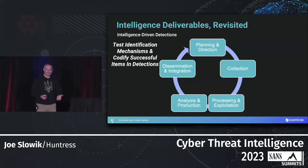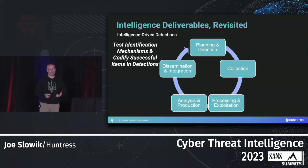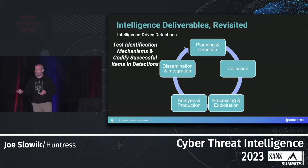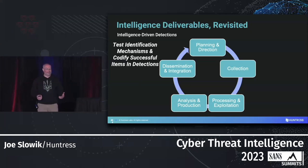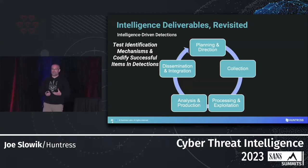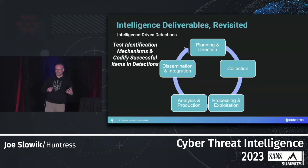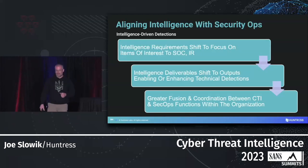Figure out what telemetry sources you have. If you work for a big Fortune 50 financial institution, you have all the bells and whistles. If you're working for a 50-person machine shop with cloud logging and Office 365, you don't have much visibility. Between those extremes, identify possibilities for flagging behaviors of high correlation to malicious operations and getting those observations in front of a decision-maker. Test identification mechanisms used in researching the threat and codify them as detectors — whether a Kibana query, a Sigma rule, or a Zeek script.